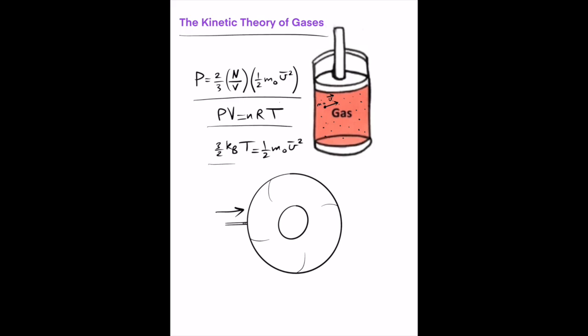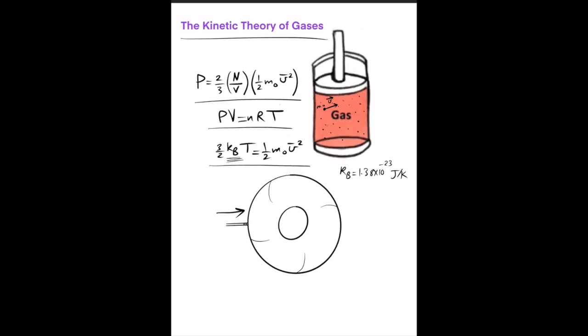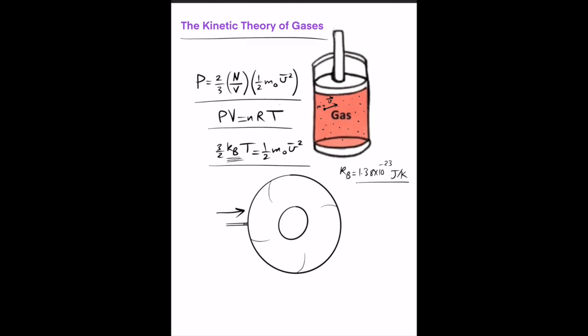Substituting into the ideal gas law, we get an expression showing that the temperature of the gas is directly related to the average translational kinetic energy of the molecule. Boltzmann's constant, k_B, has the value of 1.38 × 10⁻²³ joules per kelvin. The higher the temperature, the higher the average translational kinetic energy of the molecule.